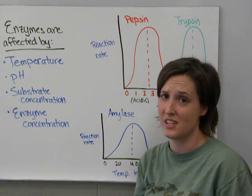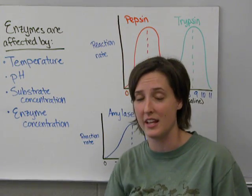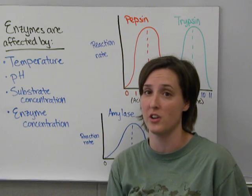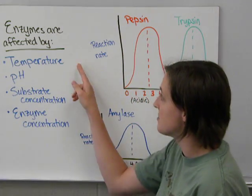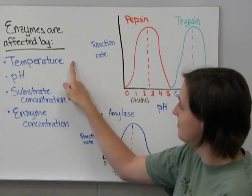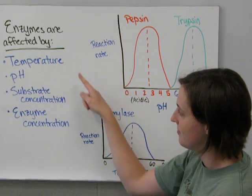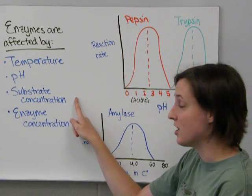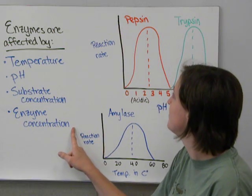Enzymes aren't perfect — they can be affected by different things, and every enzyme has an optimal range where it functions best. Enzymes can be affected by temperature, by pH, by substrate concentration, and by enzyme concentration.